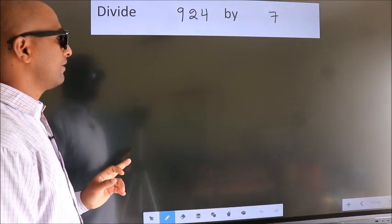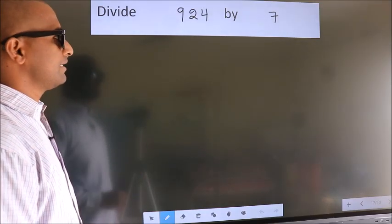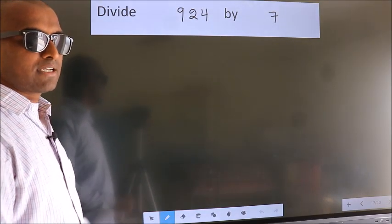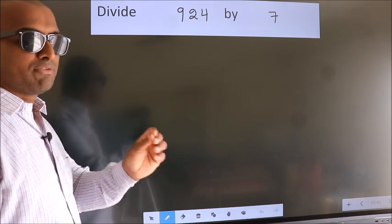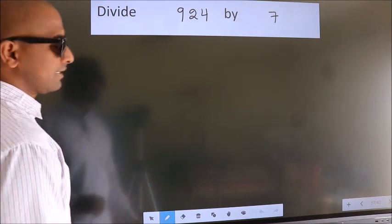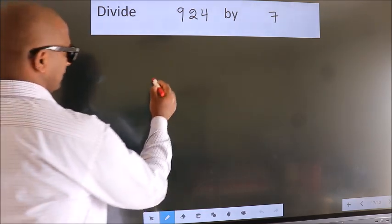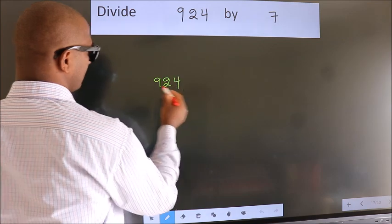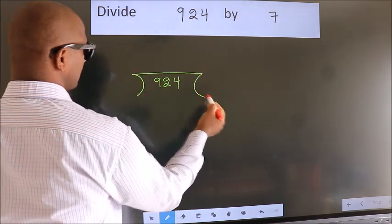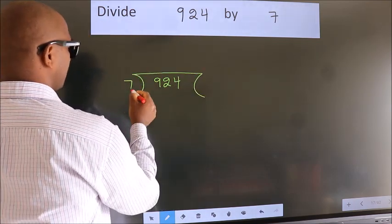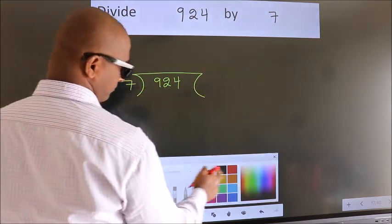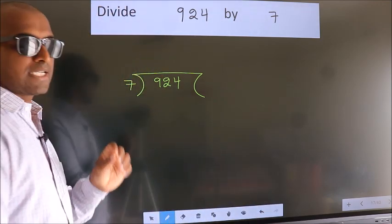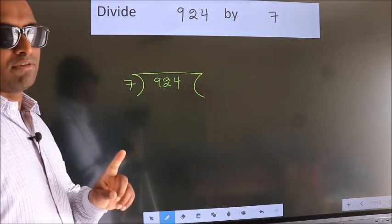Divide 924 by 7. To do this division, we should frame it in this way: 924 here, 7 here. This is your step 1.